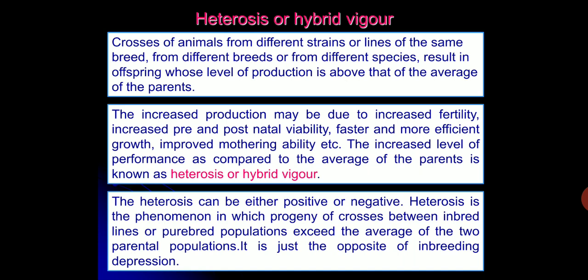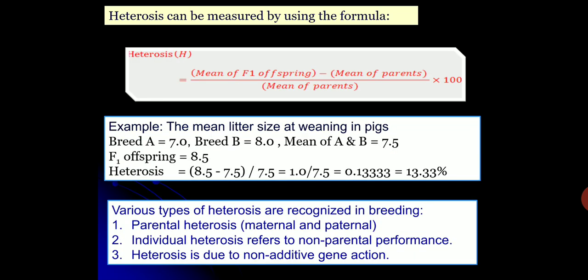When crossing two inbred lines, the resulting progeny will exceed the average performance of those two lines. The same can be applied to two pure breed populations — the progeny will exceed the average of the two parental populations. If you remember inbreeding depression from last class, inbreeding depression is just opposite to heterosis or hybrid behavior. Next we will see how we can measure heterosis.